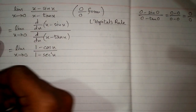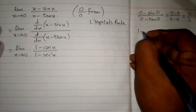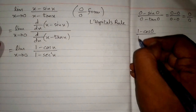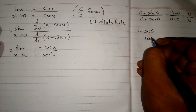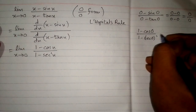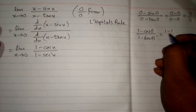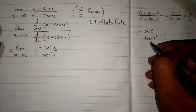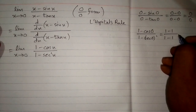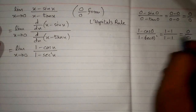If we apply the limit again on this function directly, we have 1 minus cos(0) upon 1 minus sec squared(0). Since cos(0) is 1, we have 1 minus 1 in the numerator, and since sec(0) is 1, we have 1 minus 1 in the denominator. So we have the 0 upon 0 form again.